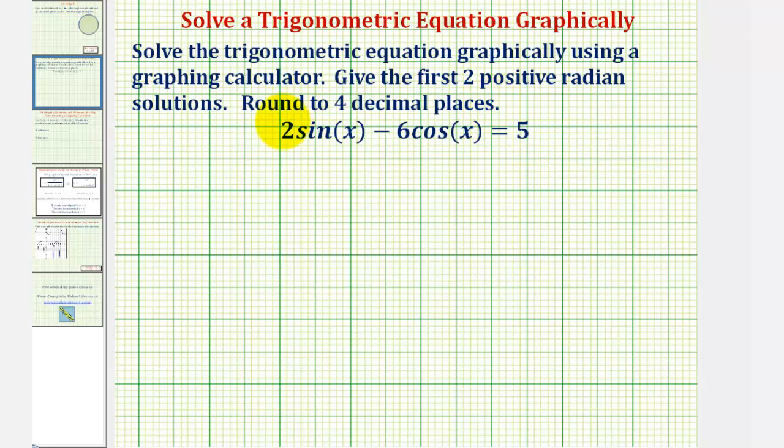So to solve this graphically, we'll enter the left side of the equation in y one. We'll enter the right side of the equation in y two. And then we'll find the first positive x values where the two graphs intersect.